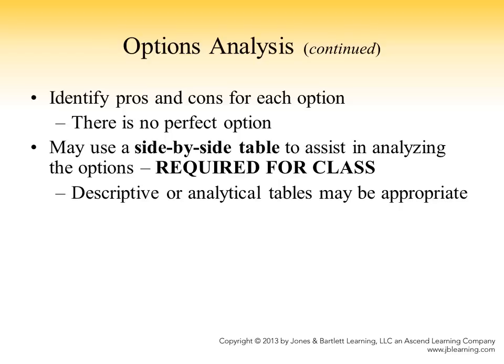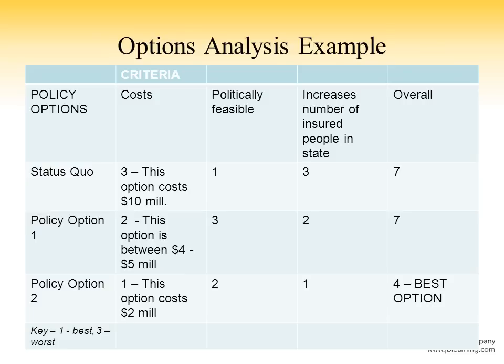After you come up with these criteria, you try to figure out how the options compare using them. The best way to do that is to create a side-by-side table, and that's required for this class. Usually in these side-by-side tables, we have a list of policy options in the rows and a list of criteria in the columns. In this case, the criteria are cost, political feasibility, and increases number of insured people in the state, plus a column for overall. I have listed three policy options: status quo, policy option one, and policy option two — and I'm ranking each option for each given criterion.